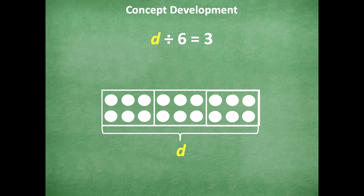So that tells me if I count six groups of three or three groups of six, I'm going to have 18. So d equals 18.